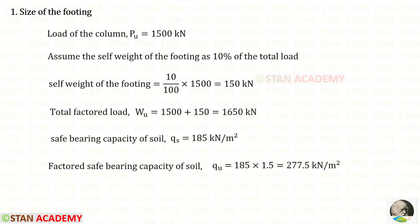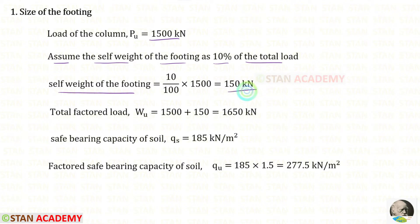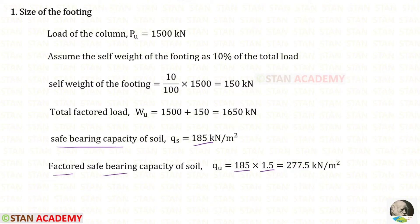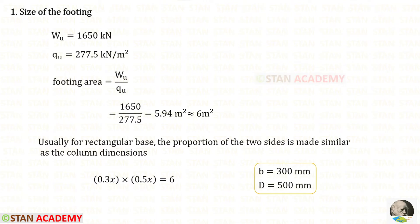The first step is to find the size of the footing. PU is 1500 kN. We assume the self-weight of the footing as 10% of the total load, giving 150 kN. Total factored load WU is 1650 kN. The safe bearing capacity is given, but we need the factored safe bearing capacity, so we multiply 195 by 1.5 to get QU = 277.5 kN/m². The footing area is WU/QU = 5.94, rounded to 6 m².